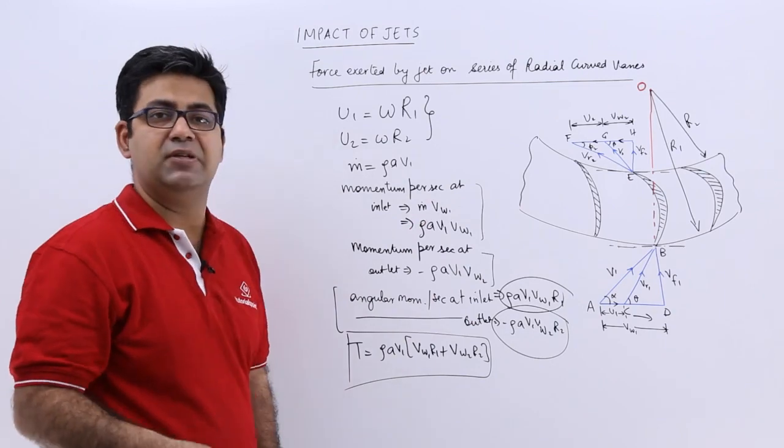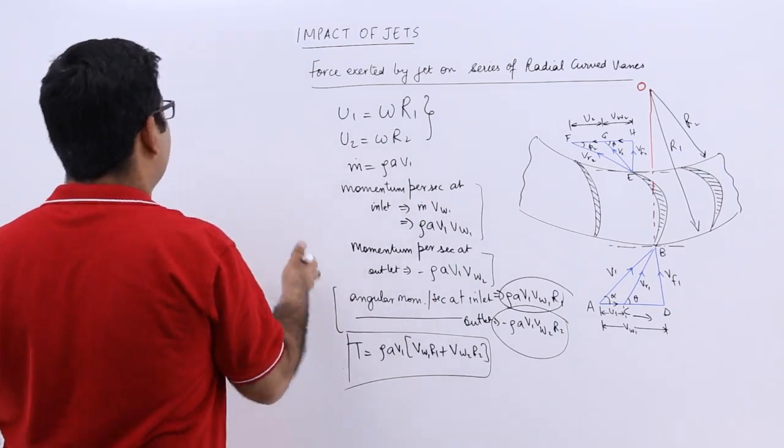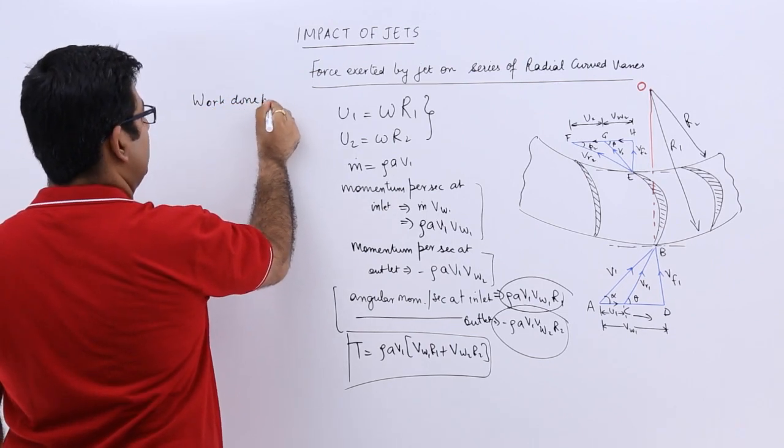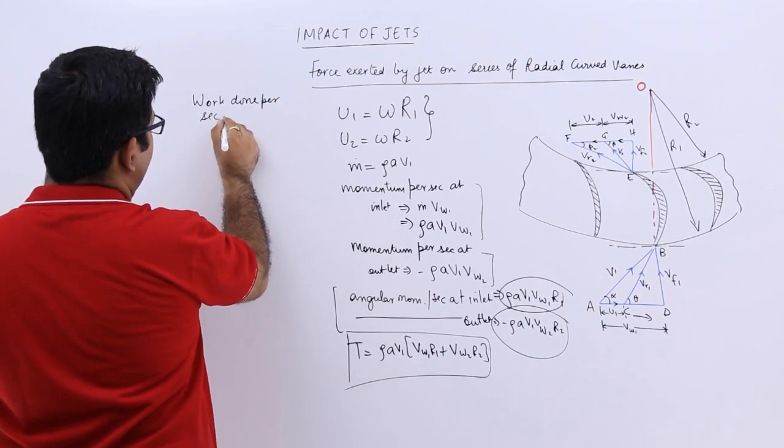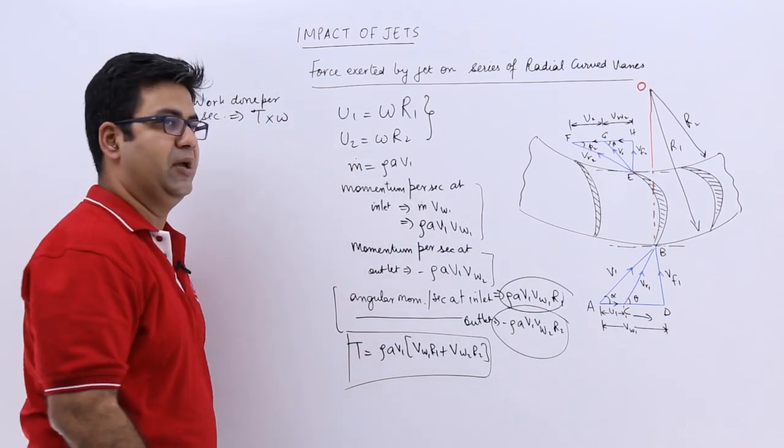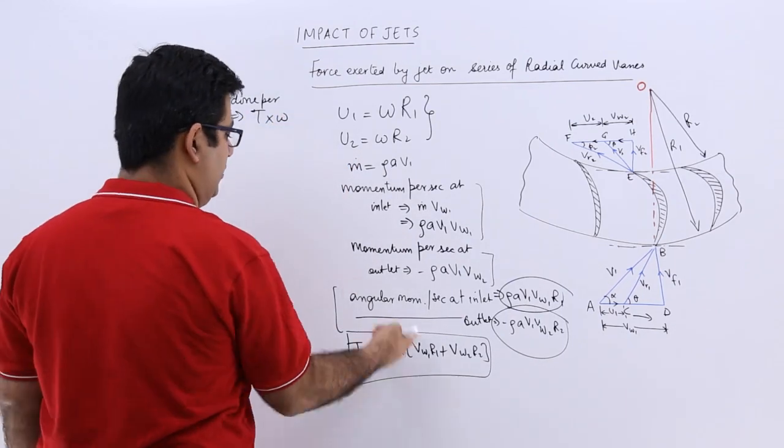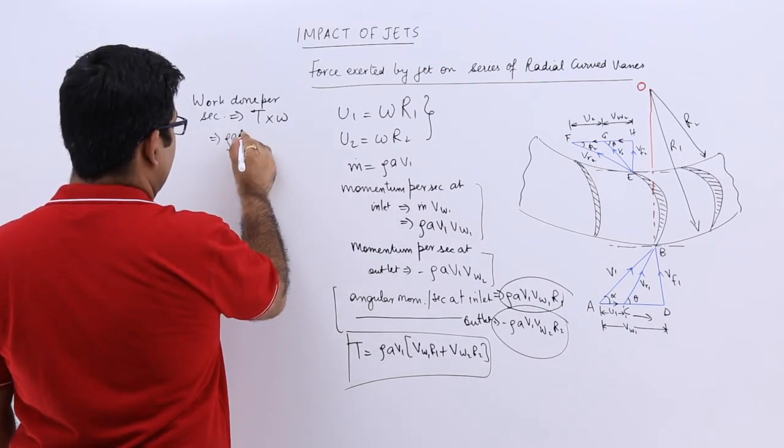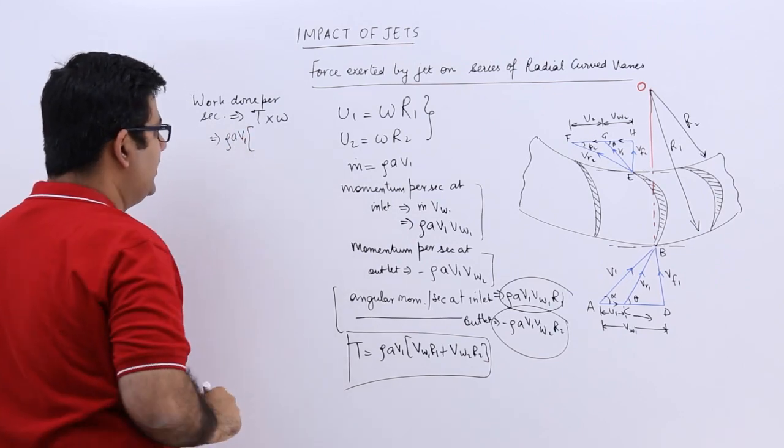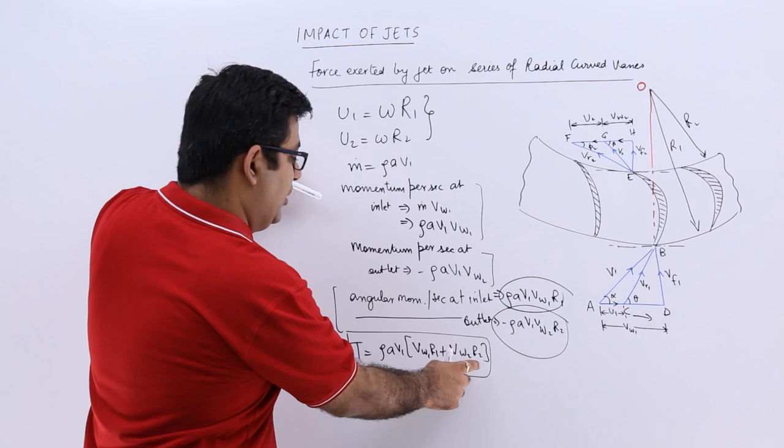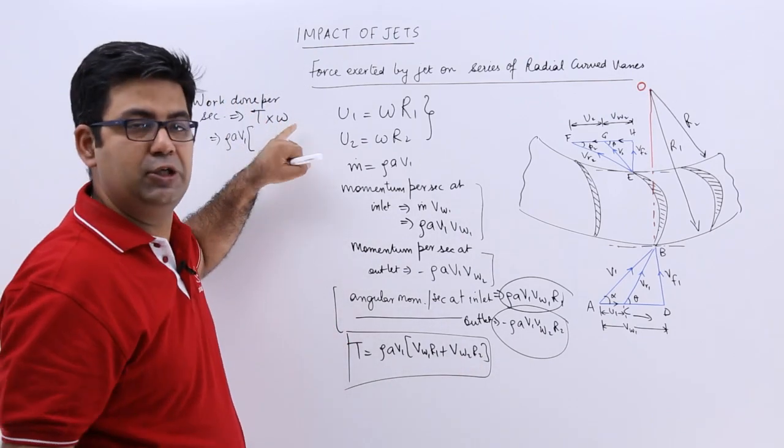Due to this torque there will be some work done, and that work done per second is equal to torque into omega, that is the angular velocity. Put the value there. You will get ρAv1. If you multiply omega with r1 and r2, you get u1 and u2 in these two places.